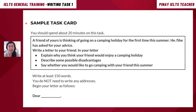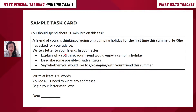Here is a sample task card — this is exactly how it looks on test day. The instructions say: 'You should spend about 20 minutes on this task. Write at least 150 words. You do not need to write any addresses. Begin your letter as follows.' The actual task inside the box reads: 'A friend of yours is thinking of going on a camping holiday for the first time this summer. He or she has asked for your advice. Write a letter to your friend. In your letter, explain why you think your friend would enjoy a camping holiday, describe some possible disadvantages, and say whether you would like to go camping with your friend this summer.'